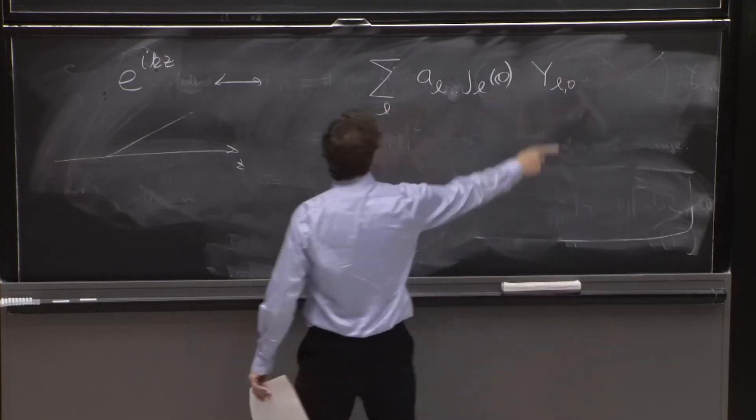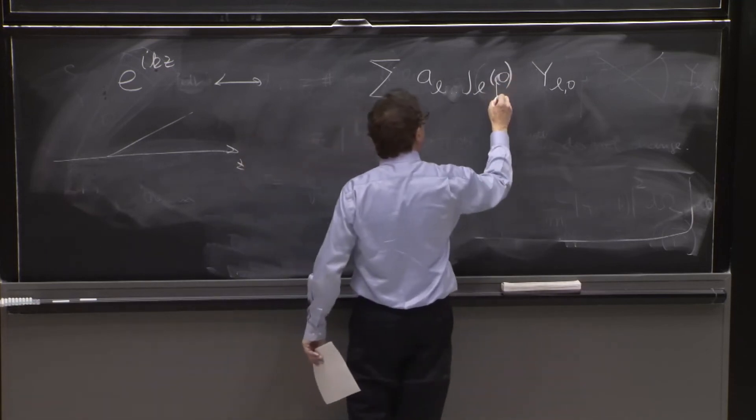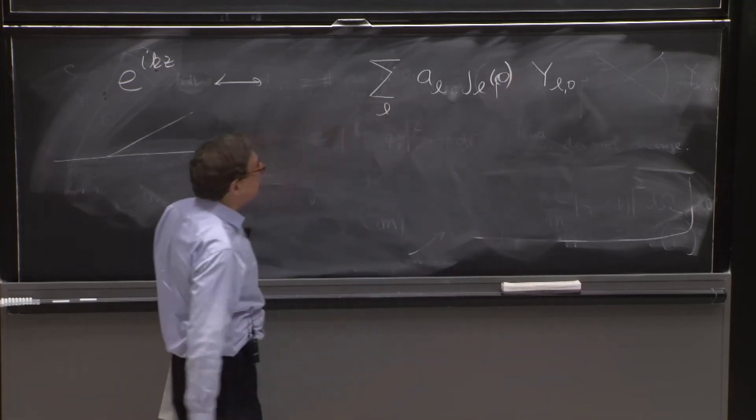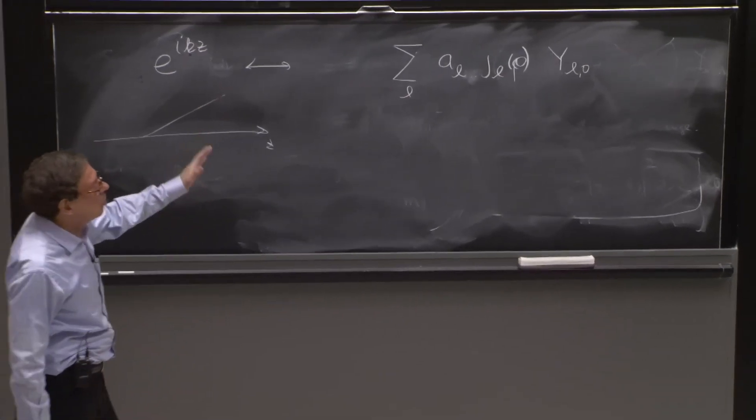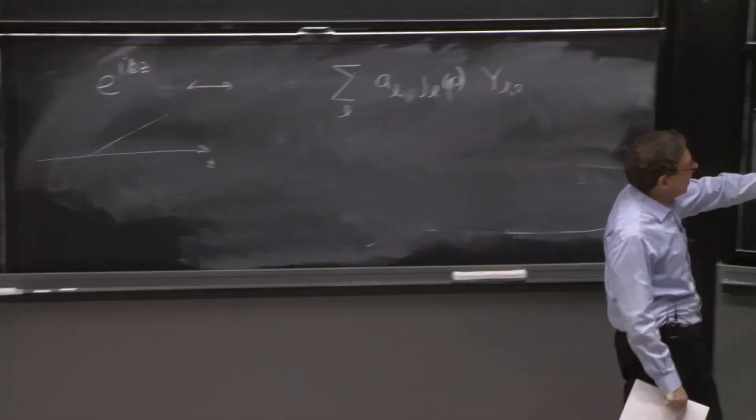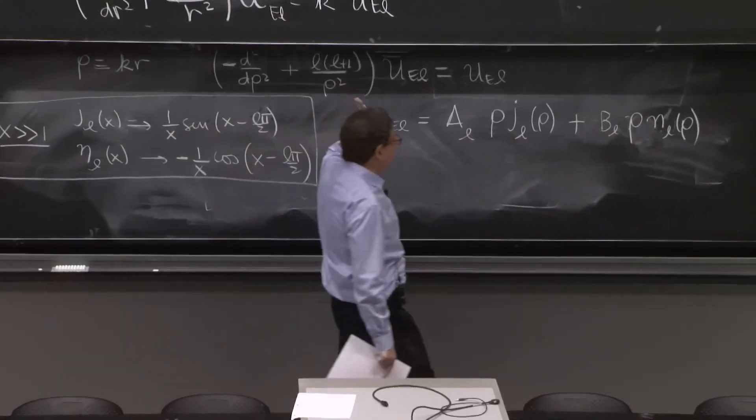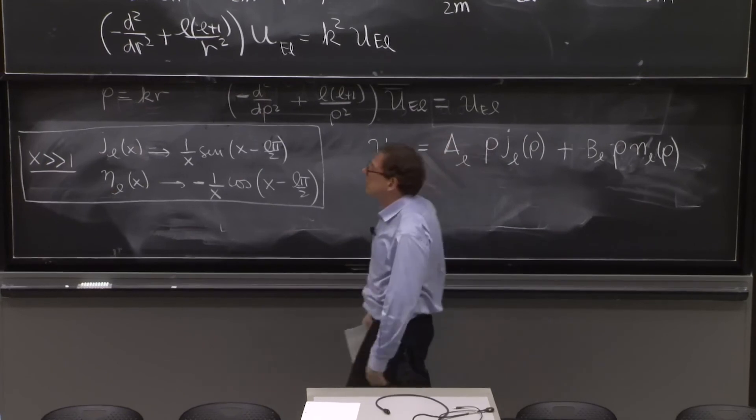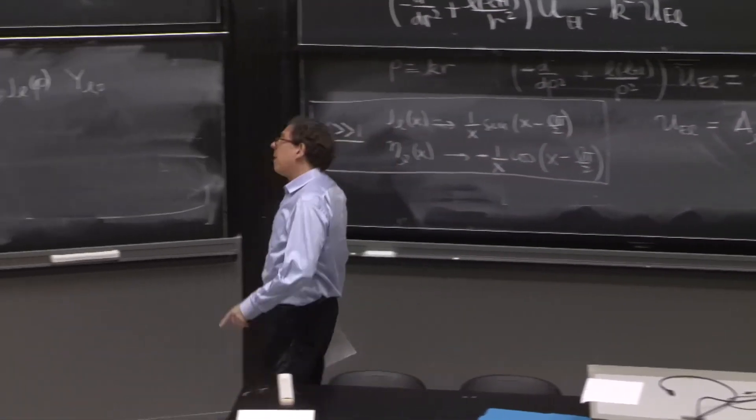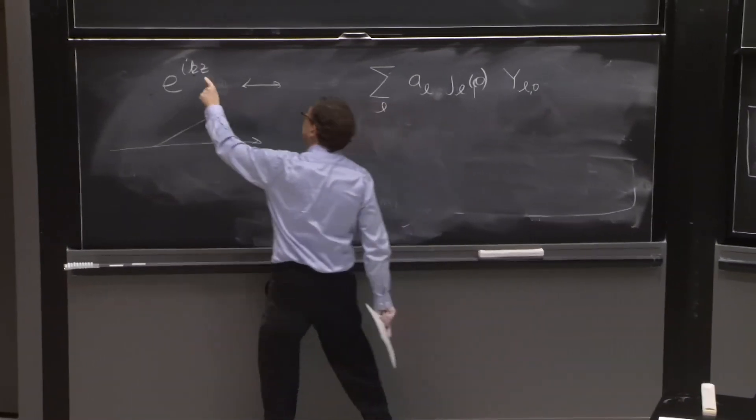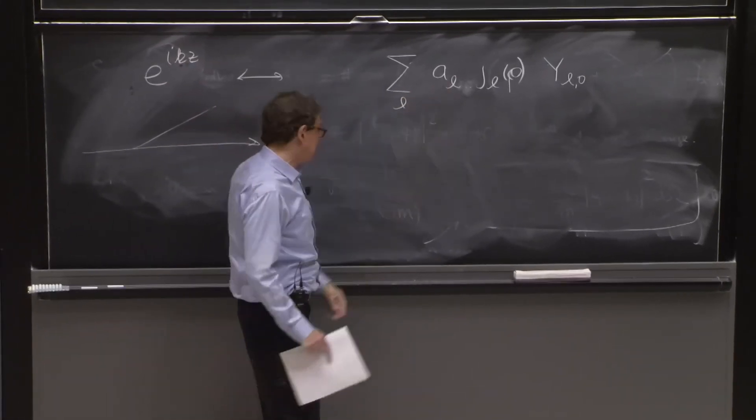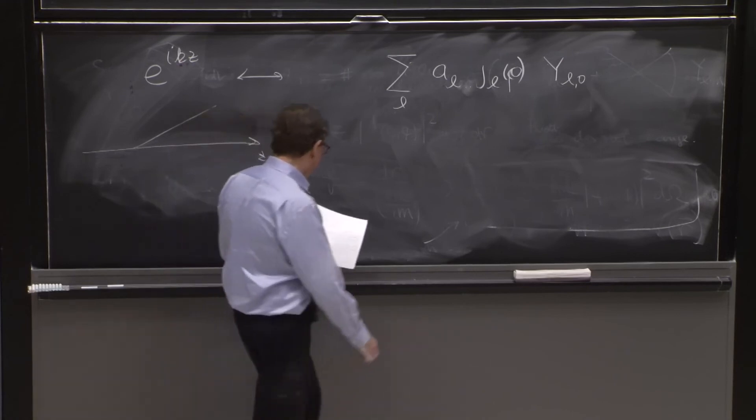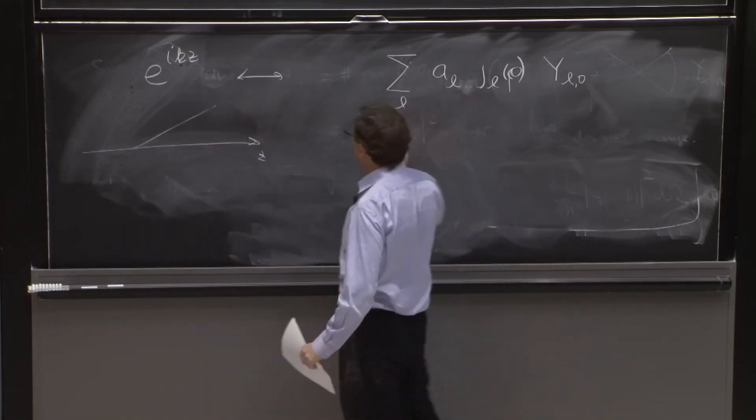And all of those would be perfectly good plane wave solutions. Whatever numbers you choose for the little a_l's, those are good solutions because we've built them by taking linear combinations of exact solutions of this equation. But to represent this quantity, the a_l's must take particular values. So what is that formula? That formula is quite famous.